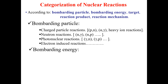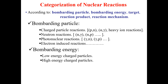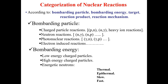If we characterize nuclear reactions with respect to the energy of the bombarding particle, we can have low energy charged particle interactions, high energy charged particle interactions, and energetic neutrons. Energetic neutrons can be thermal, epithermal, slow, or fast. These are the main categories when characterizing nuclear reactions according to bombarding energy.